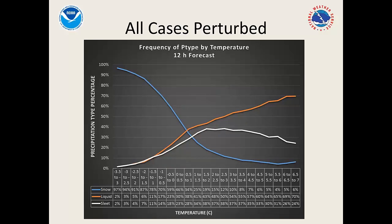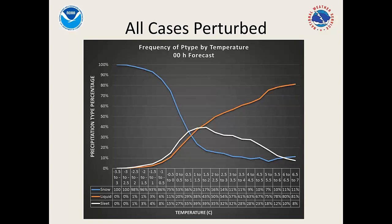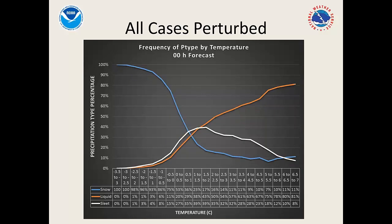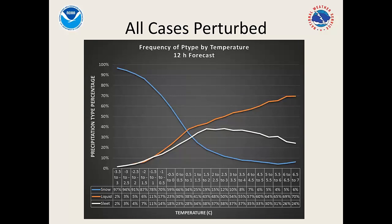Moving to hour 12 — perturbing with normal errors seen at hour 12 — sleet probability actually goes down further and is never higher than freezing rain at any temperature. This makes sense because sleet requires a much narrower temperature range than freezing rain. As you go further out in the forecast with increasing model uncertainty, sleet probability decreases. Even if the forecast shows a plus 2°C warm nose — normally associated with higher sleet probability — model errors in either direction will reduce sleet probability and increase the others, since snow can occur at anything below zero and freezing rain at anything warmer.